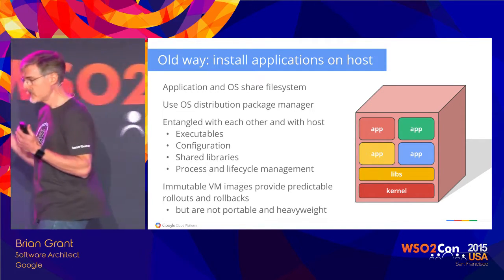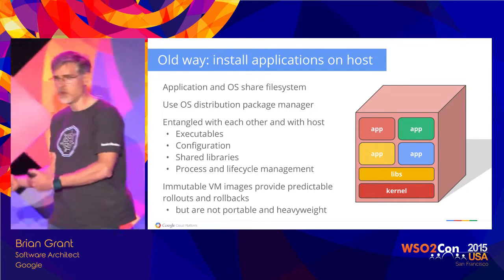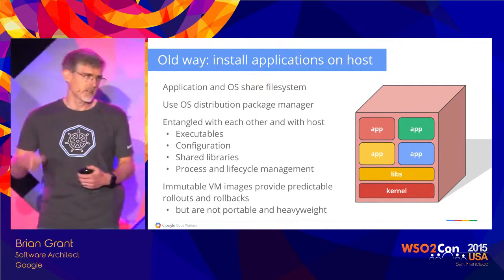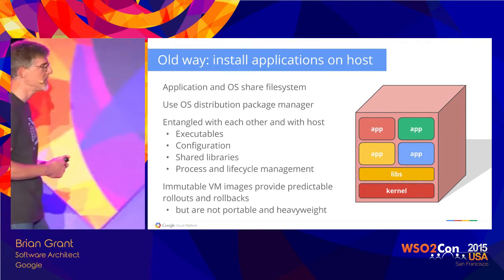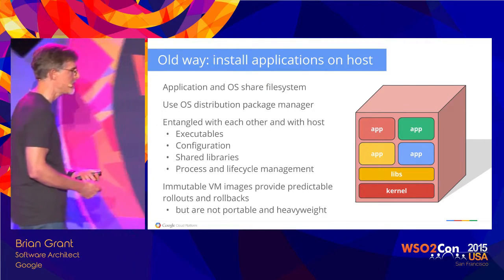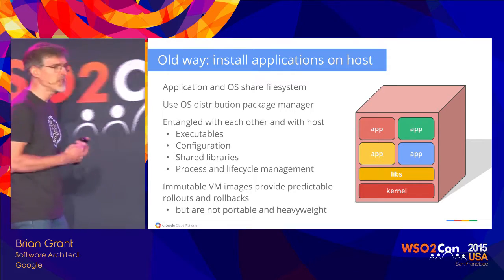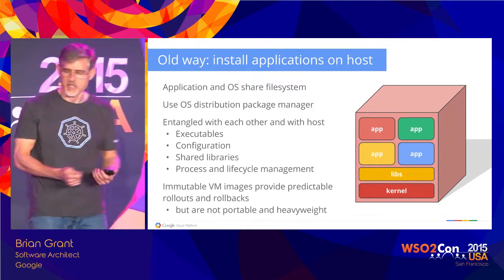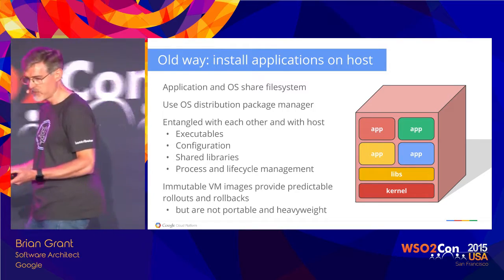You could achieve immutable deployments for predictability of rollouts and rollbacks by installing these things into a virtual machine image instead of onto the physical host. But virtual machine images are not portable and they're very heavyweight, so not a lot of people do that.